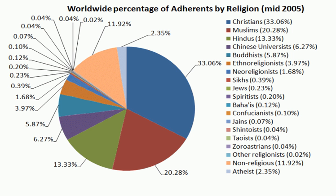During the time of the Sramanic reform movements, many elements of the Vedic religion were lost. According to Michaels, it is justified to see a turning point between the Vedic religion and Hindu religions.